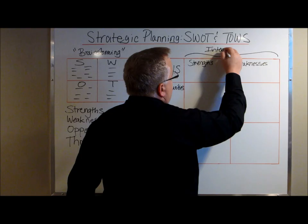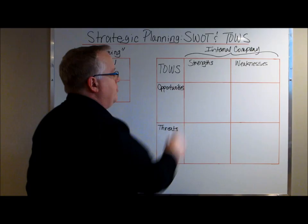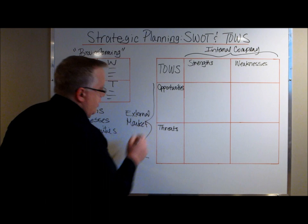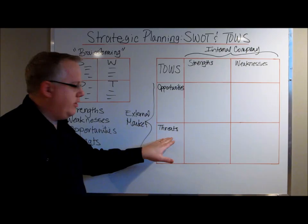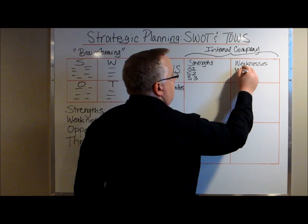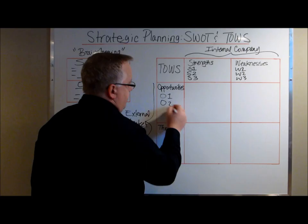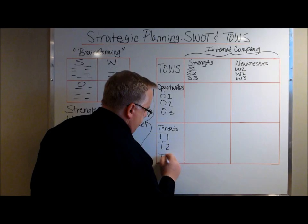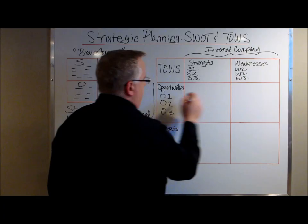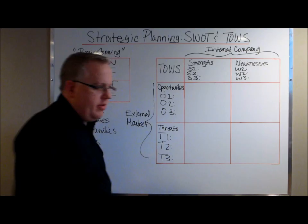Strengths and weaknesses are internal attributes driven by the company. We're going to force ourselves to see our opportunities and threats as external to our market. We also simplify how we occupy the four quadrants by keeping entries to a minimum. So you'll often see: S1, S2, S3; W1, W2, W3; O1, O2, O3; T1, T2, T3 — you can go up to 5, but try not to go beyond that. This keeps it clear and concise in terms of what your strengths, weaknesses, opportunities, and threats are. Those threats could come from competitors, issues outside your immediate market, or a competing technology.